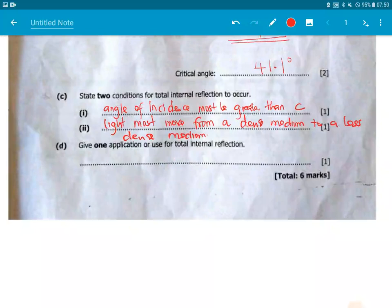Nevertheless, they ask, give one application or use of total internal reflection. Where can we use total internal reflection? Well, number one, in optical fibers. You know optical fibers, those data carriers. They are cables underground that are able to carry information closer to the speed of light. Optical fibers.